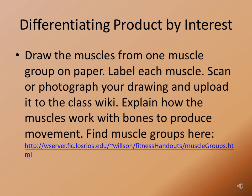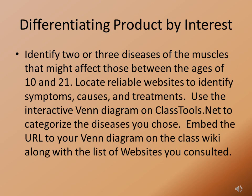As independent practice, students can choose from three different tasks designed to address how bones and muscles work together to produce movement. In the first task, students will draw the muscles from one muscle group on paper, label each muscle, then scan or photograph those drawings and upload them to the class wiki. In the second task, students may choose to identify two or three diseases of the muscles, locate and evaluate a reliable website, and create a Venn diagram using an interactive tool on classtools.net to categorize those diseases, then share that URL on the class wiki.